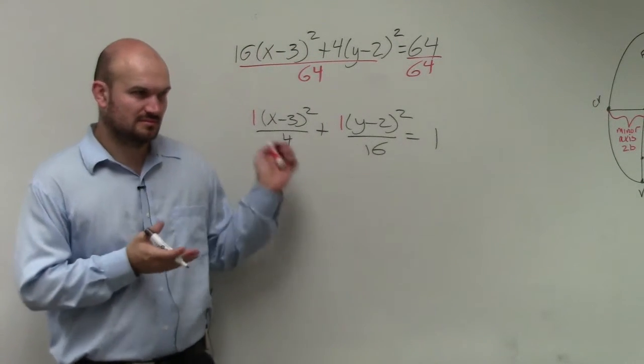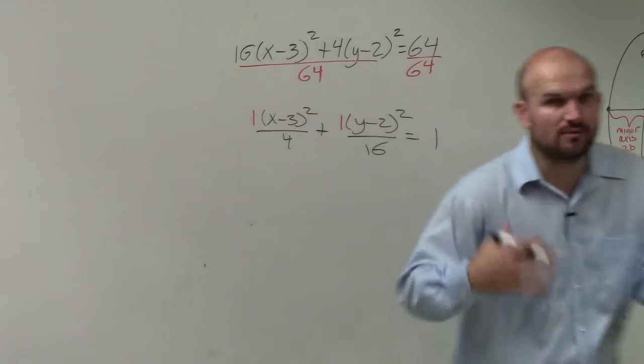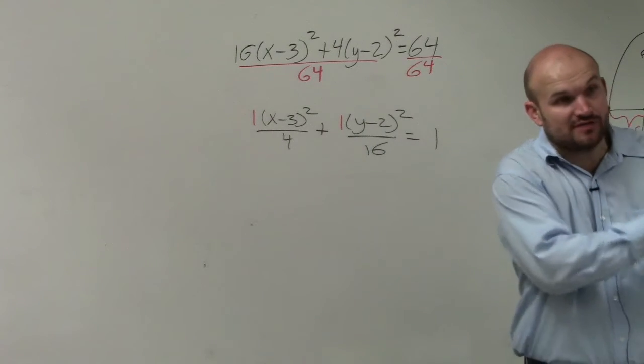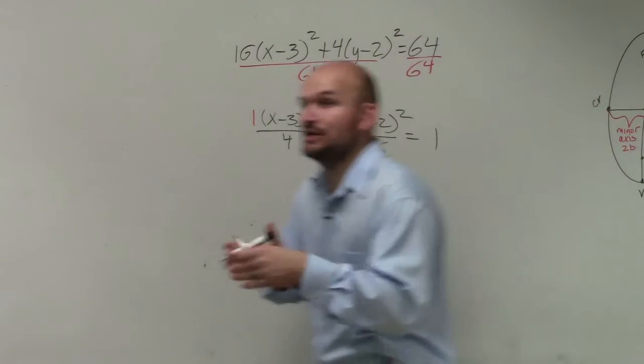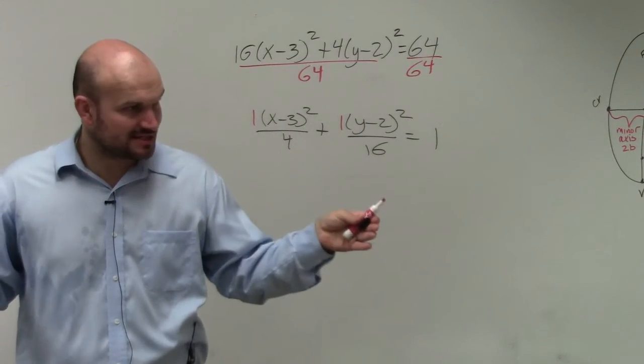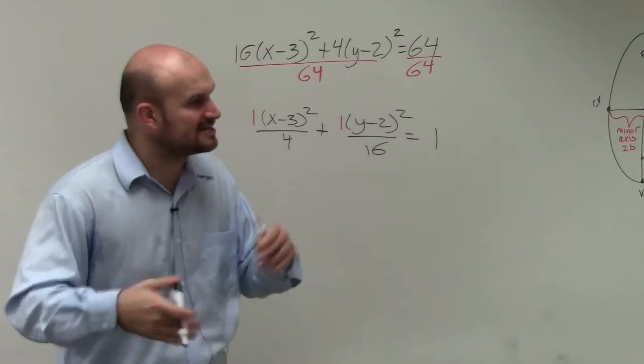Now it's very easy to identify a and b. Remember, a is the distance from the center to the vertices, and b is the distance from the center to the co-vertices. The vertices are on the major axis, co-vertices are on the minor axis. The major axis is always larger than the minor axis.